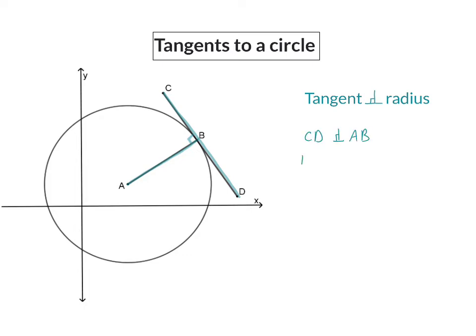This means that the gradient of CD multiplied with the gradient of AB will always be minus one. I'm reminding you that the one gradient will always be the reciprocal of the other along with the opposite sign.